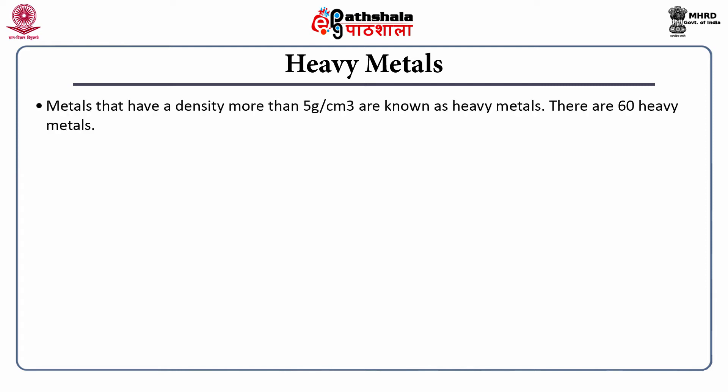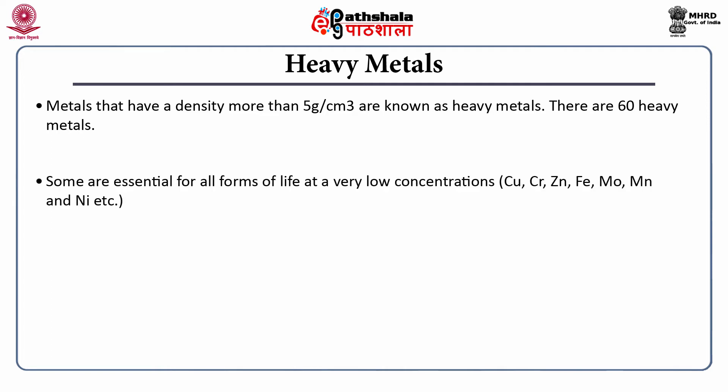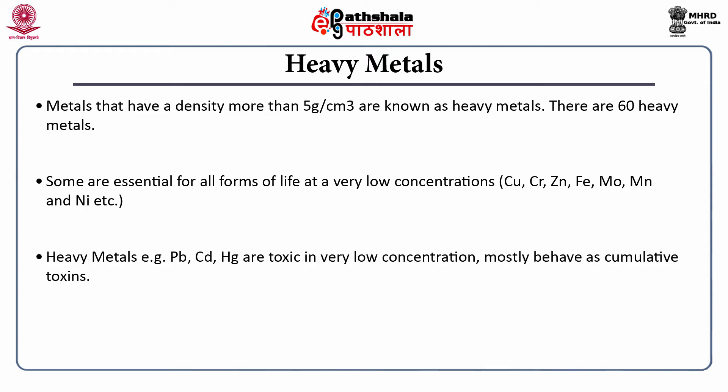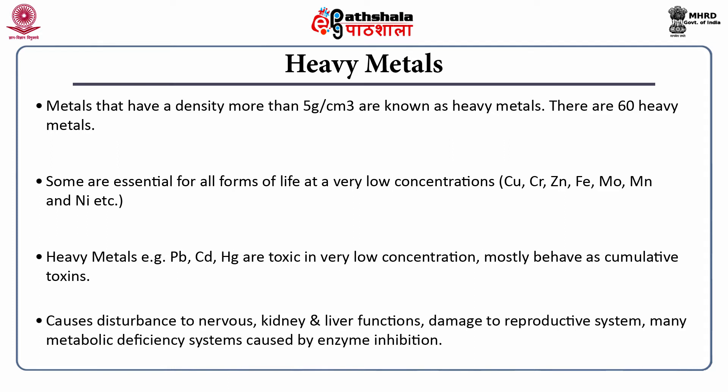First, heavy metals. Heavy metals have a density more than 5 grams per cubic centimeter, and there are 60 heavy metals in our periodic table. Some are essential for all life forms at very low concentrations, but few are toxic at very low concentrations and are regarded as toxic heavy metals. They mostly behave as cumulative toxins. Accumulation of high levels of heavy metals in humans causes disturbance in the nervous system, abnormal kidney and liver functions, damage to the reproductive system, and many metabolic deficiencies due to enzyme inhibition.